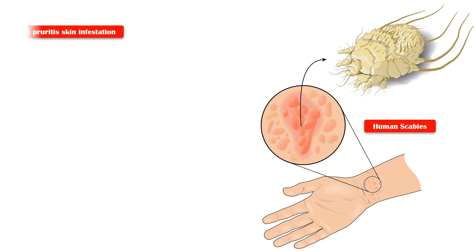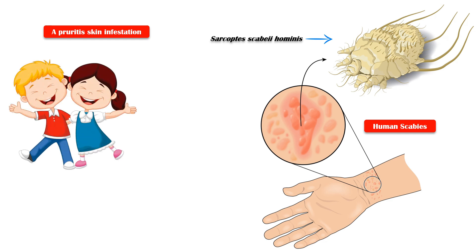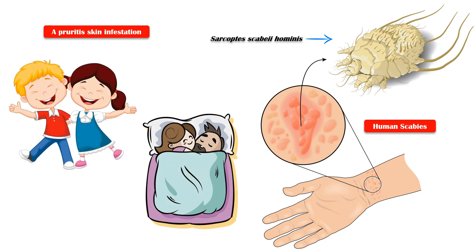Human scabies is a pruritic skin infestation caused by the host-specific mite, Sarcoptes scabiei hominis. It is a global public health problem, commonly affecting children and sexually active individuals. In this video, our main goal is to explore the common signs and symptoms of scabies. If you are looking for a more comprehensive lecture on this topic, please watch my previous video on human scabies.